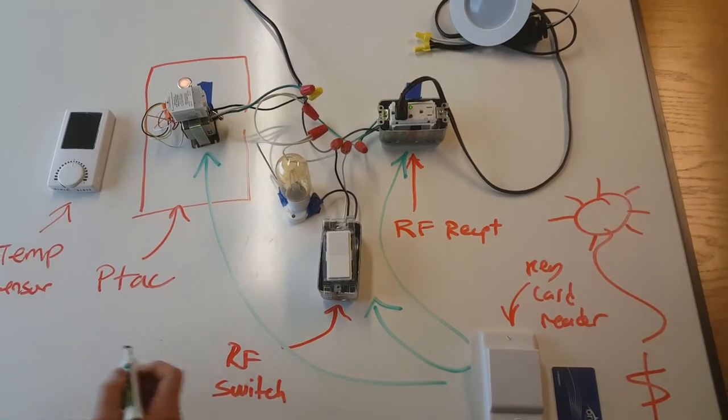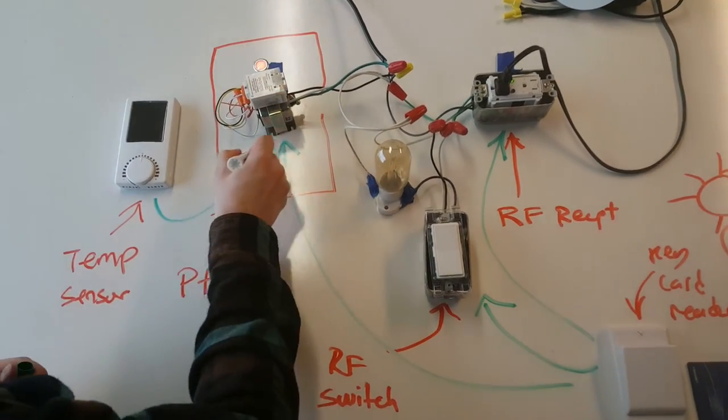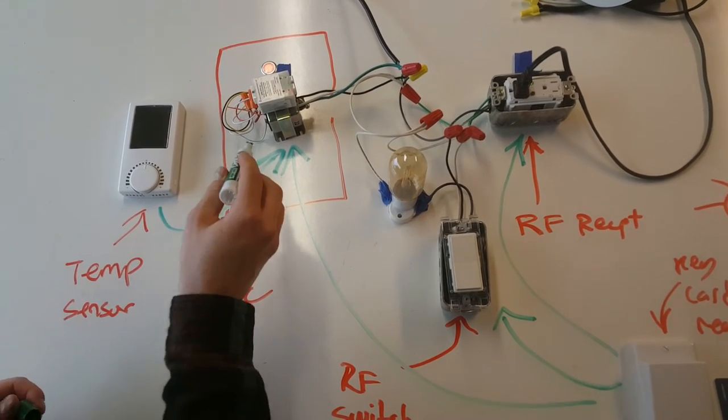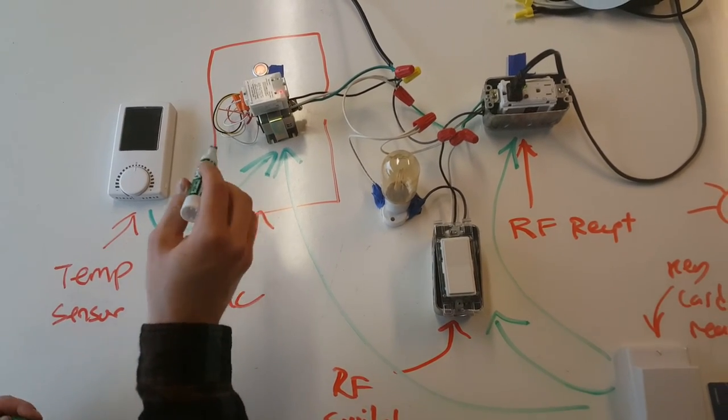Now, when the space is vacant, this temperature sensor can still communicate with the PTAC, overriding the off state if the space gets too hot or too cold.